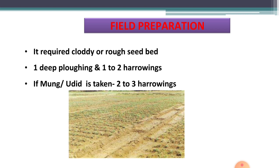Now see the field preparation or land preparation for sowing gram crop. Gram is a hardy crop, so it requires a rough or cloddy seedbed. This crop requires one deep plowing and one to two harrowings. If green gram or black gram was grown in kharif season in the same land, then only two to three harrowings are needed.